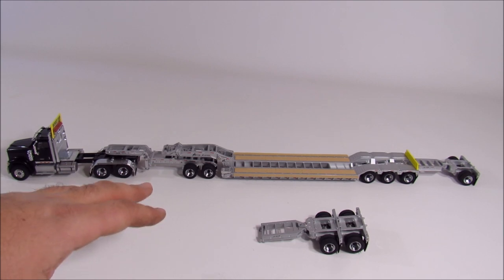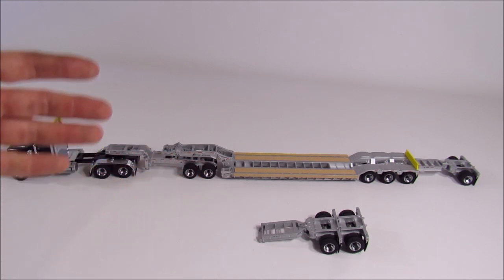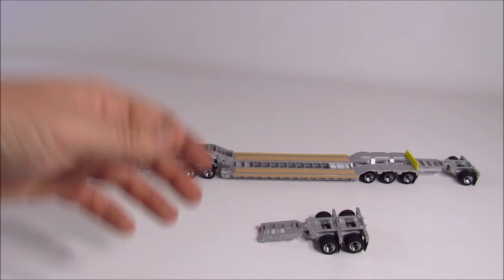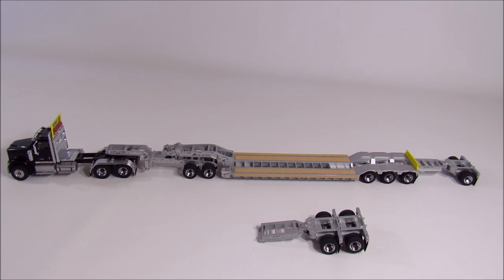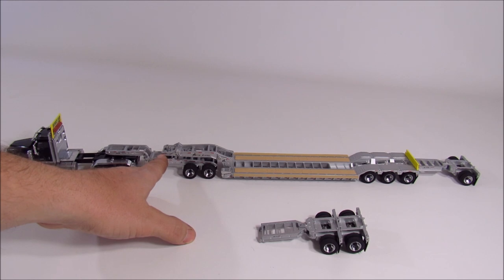So to kind of explain why this trailer is the way it is, all right, so it's an XL 120, which probably means that it's good for either 120,000 pound capacity, like it's a 60-ton low boy, or it's good for 120,000 pounds overall, including the trailer and everything. And I'm not really sure, I don't know, I'm not a DOT numbers guy, but...